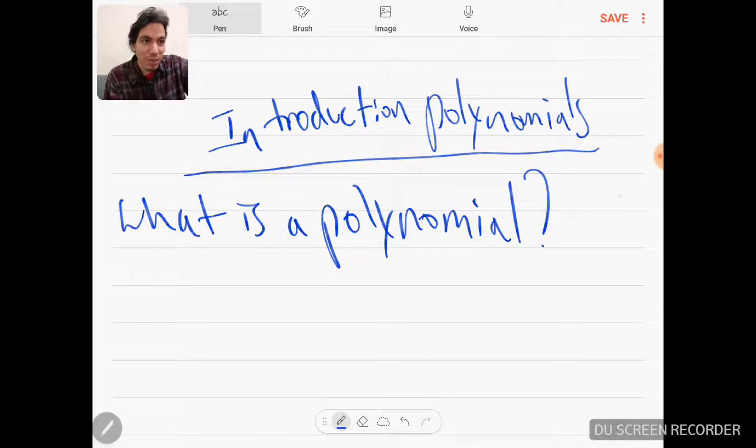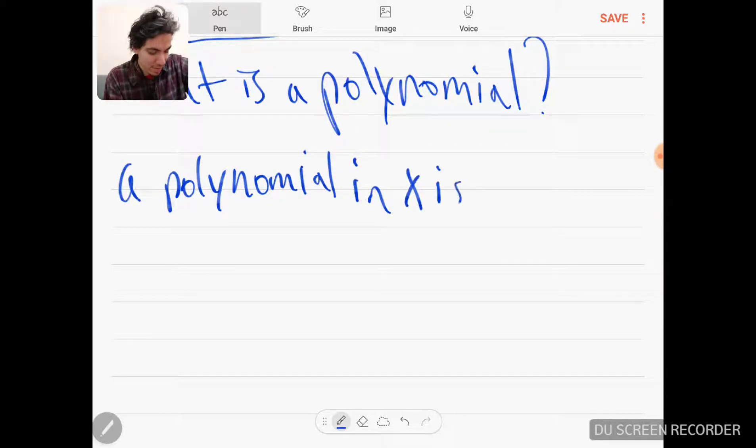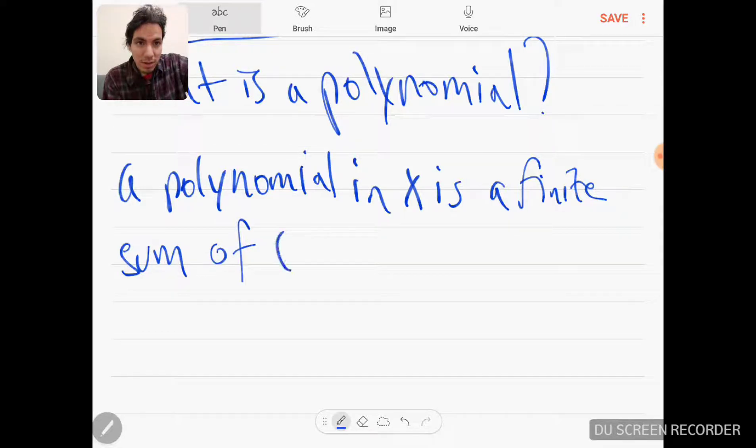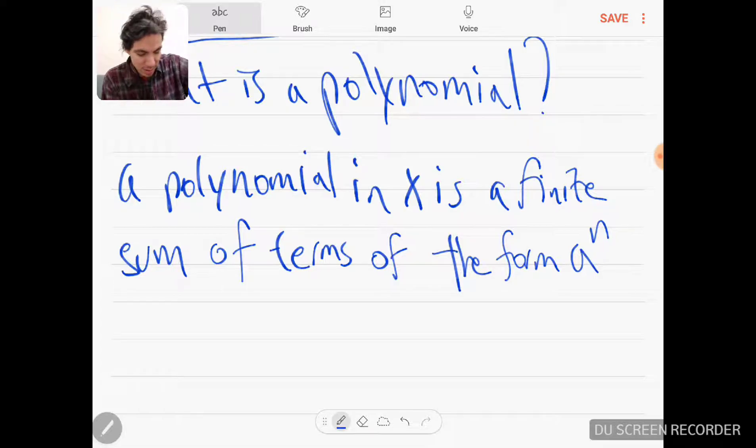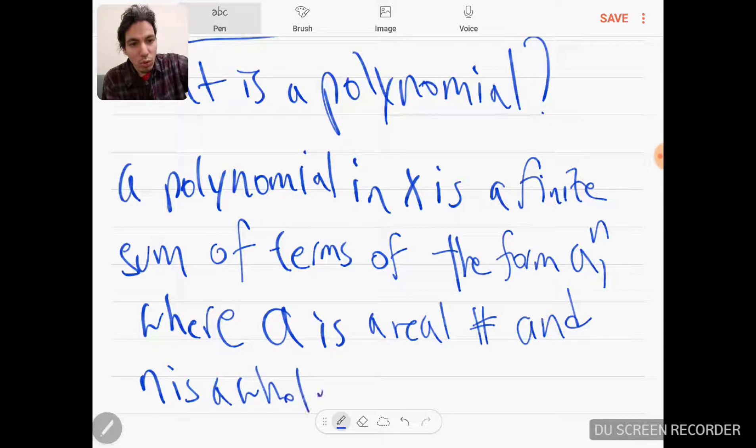What is a polynomial? The definition is: a polynomial in X is a finite sum of terms of the form a_n x^n, where a is a real number and n is a whole number.